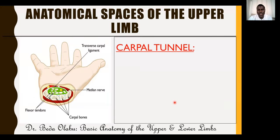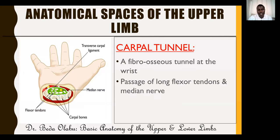The carpal tunnel is a fibroosseous tunnel at the wrist. The carpal bones are curved, and their curvature plus a bridging ligament on the anterior aspect forms the tunnel. The tunnel contains the long flexor tendons — tendons of anterior forearm muscles that flex the fingers. The median nerve also passes through this tunnel, making it a common site of median nerve compression.